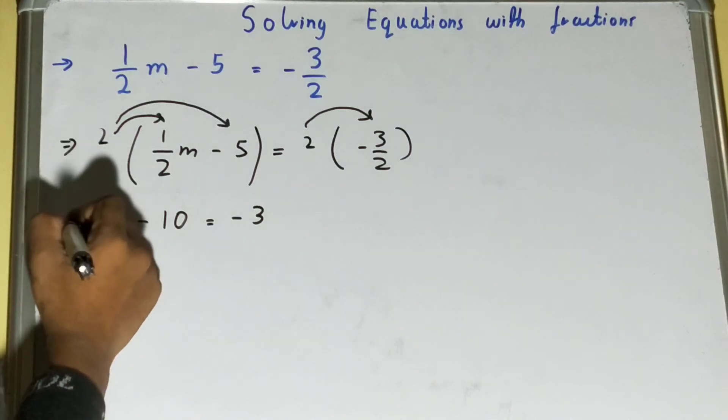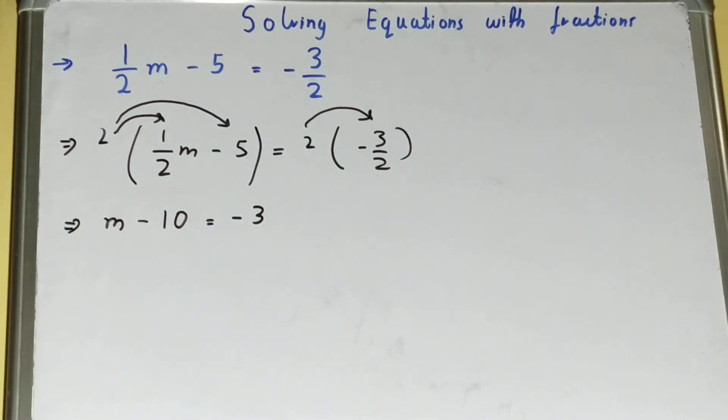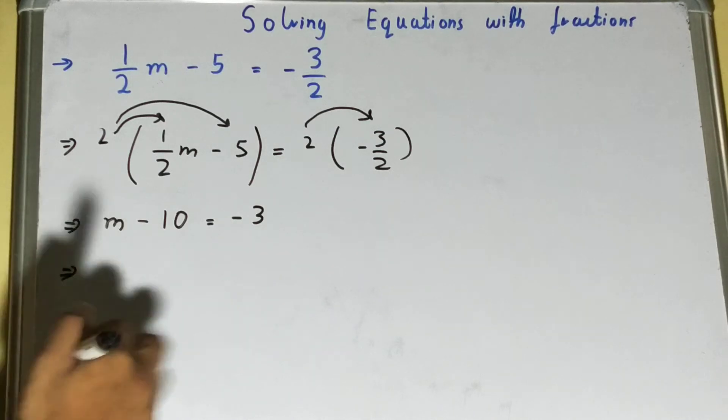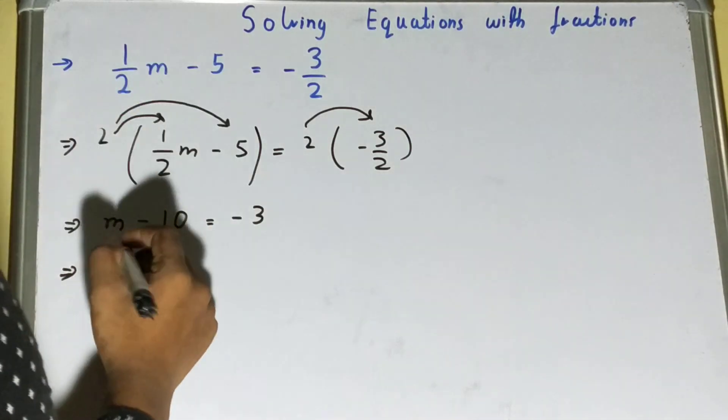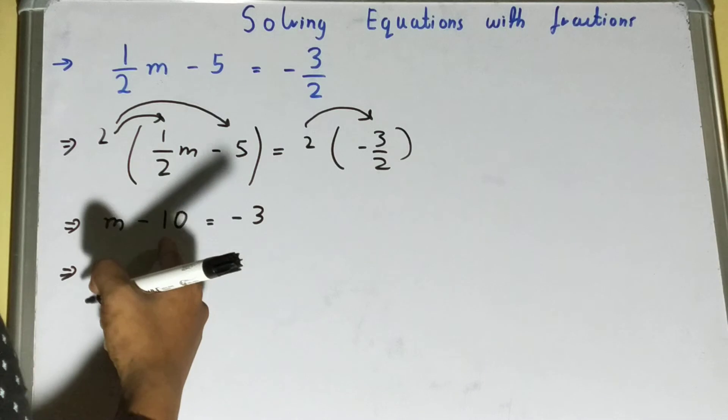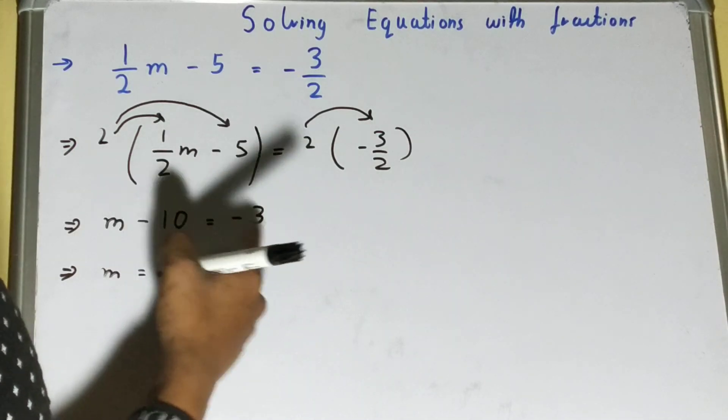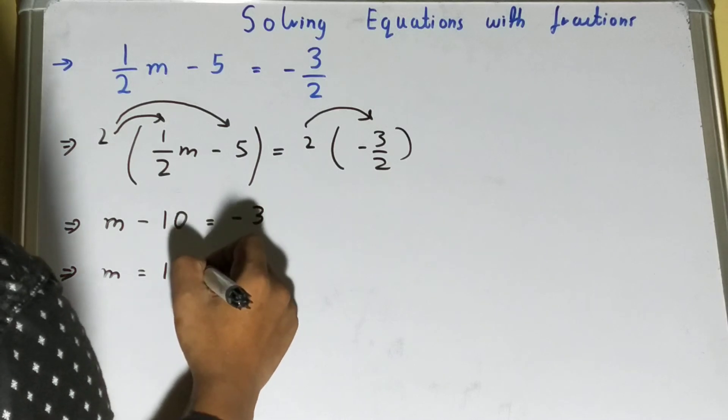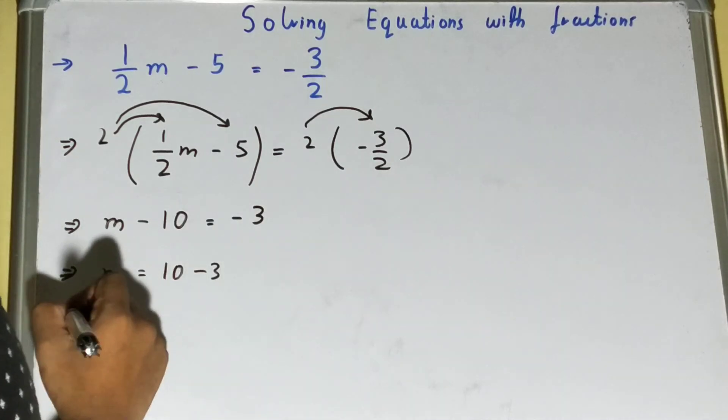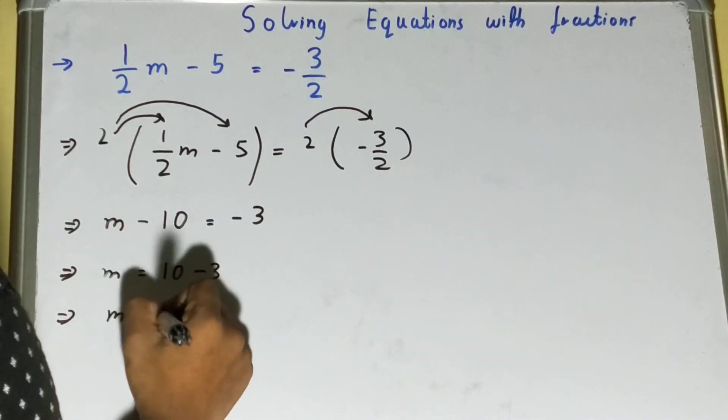Now it has become much simplified, right? What we need to do is send this ten over here. Once we send this ten over here, the sign will change. It is negative, so it will become positive. Ten minus three. So M equals seven, answer.